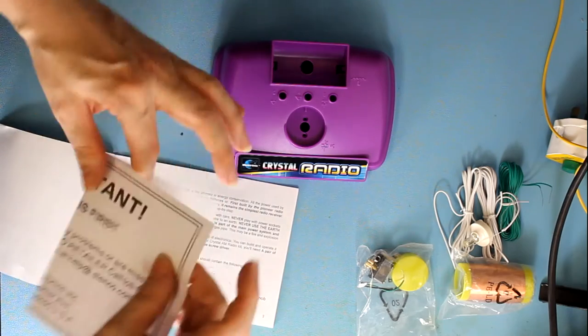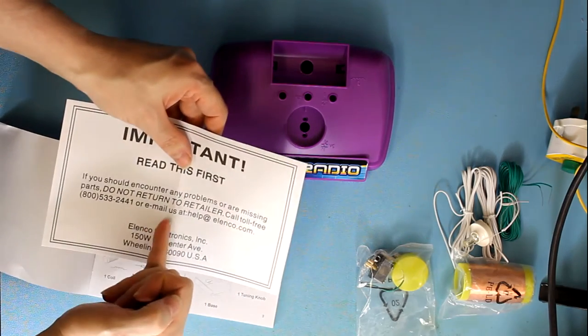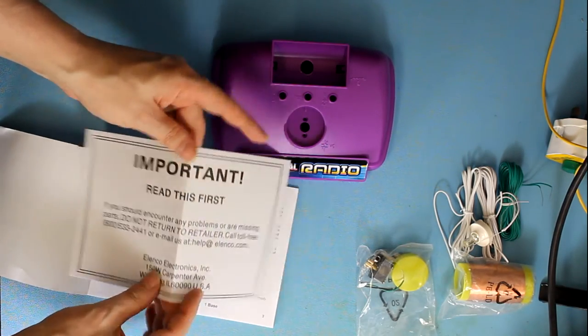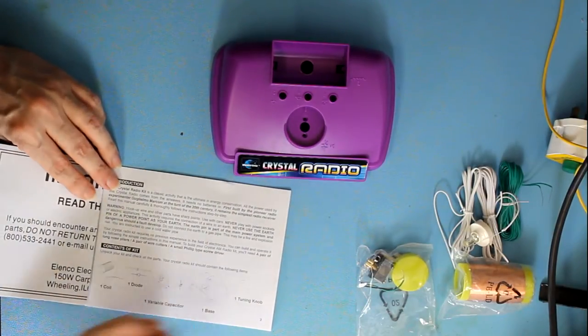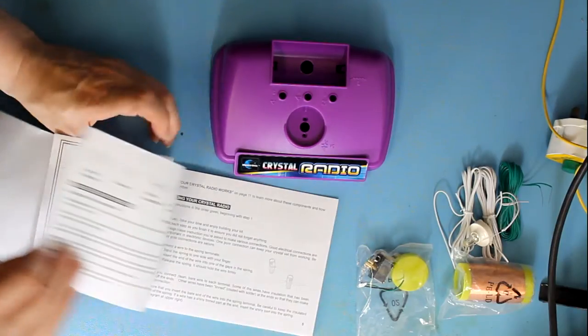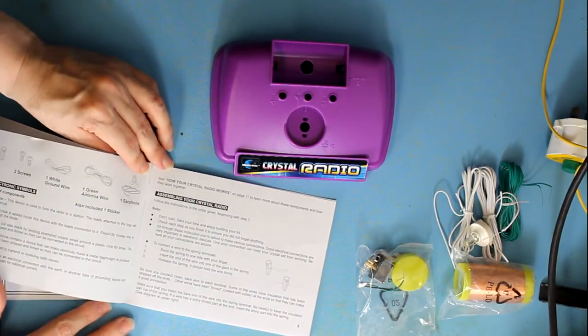A note stating that if anything is missing just contact them on the email address there and they'll arrange to get the parts out to you. Here's a list of the parts that are in the box.